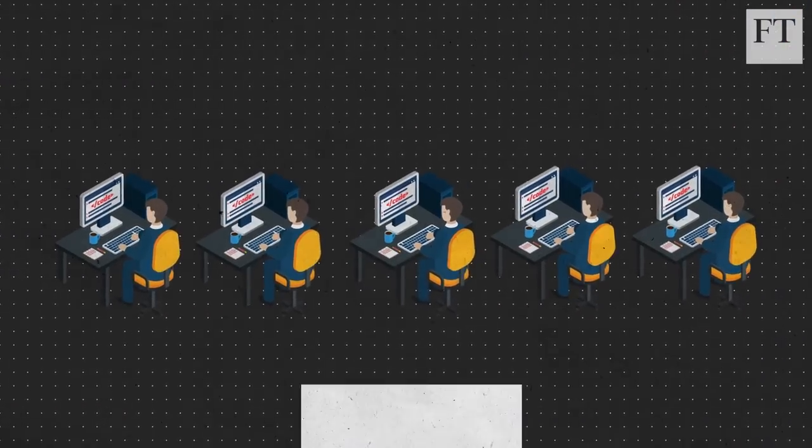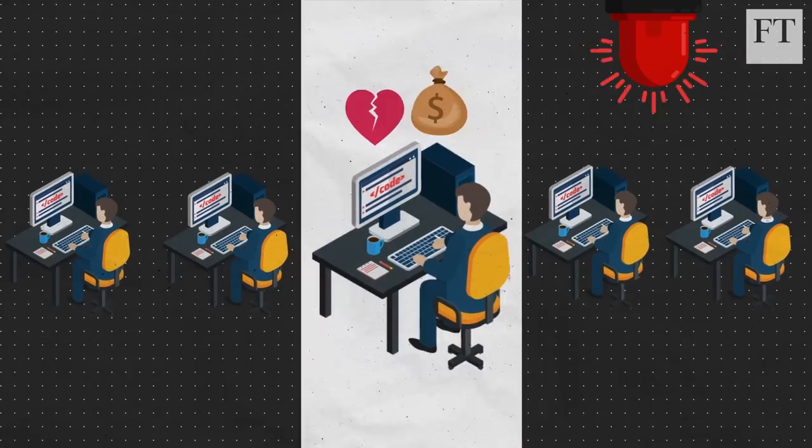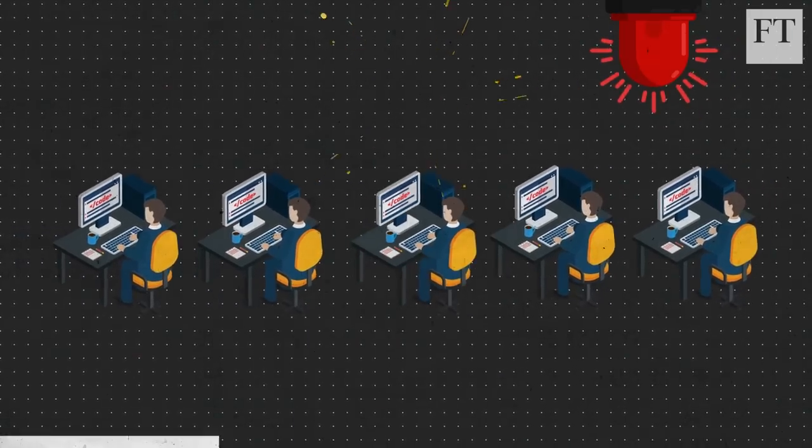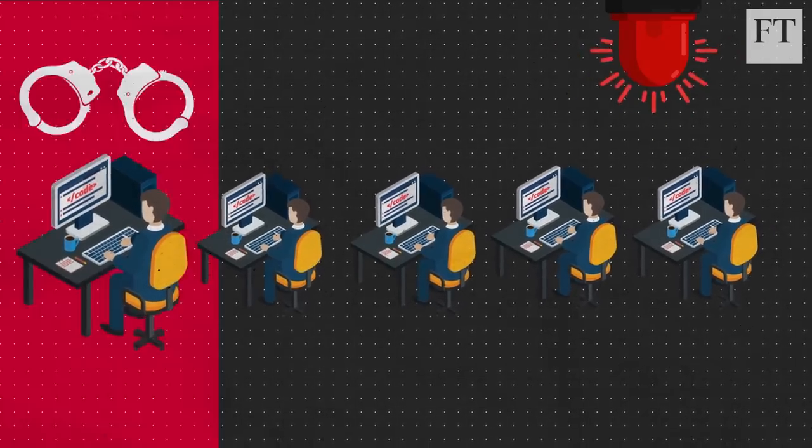That means someone with a big divorce settlement could be flagged as a higher risk for rogue trading since they might need the money, as could someone with a court conviction that might be evidence of dishonesty.